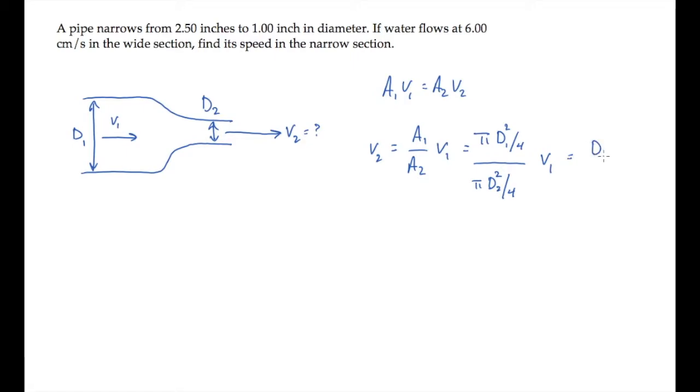Cancel the common factors and substitute numbers to see that v2, the flow speed in the narrow part, is 37.5 cm per second, faster than it was in the wider part of the pipe.